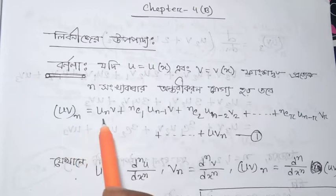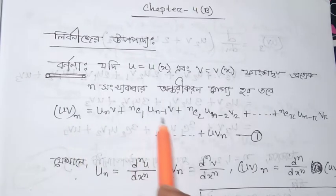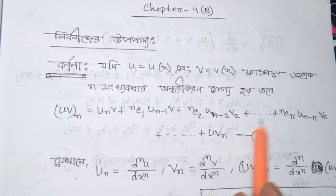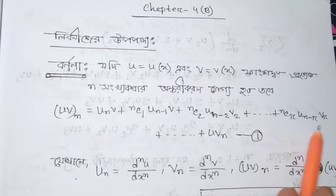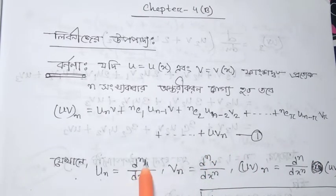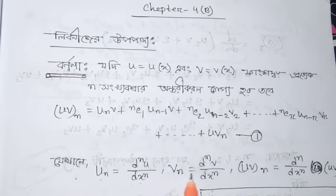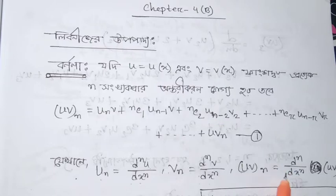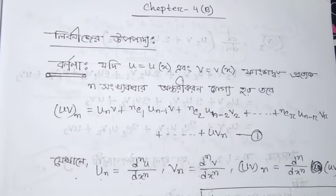The Leibniz formula states: UV_n equals U_n·V plus nC1·U_{n-1}·V_1 plus nC2·U_{n-2}·V_2 plus dot dot dot plus nCr·U_{n-r}·V_r plus dot dot dot plus U·V_n. Here, U_n = d^n·U/dx^n, V_n = d^n·V/dx^n, and UV_n = d^n(UV)/dx^n.